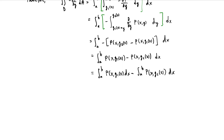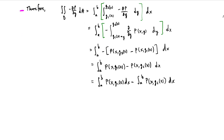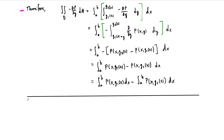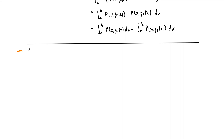If we're going to show that these are equal, the next step is to show that the right-hand side holds — which is the path integral of P dx around the boundary. On the other hand, we have this path integral — it's just P dx, since we've made the assumption that the Q component is zero. What we need to do is integrate around the boundary, but the boundary of our type 1 region has four components: C1, C2 (vertical), C3, and C4 (also vertical).